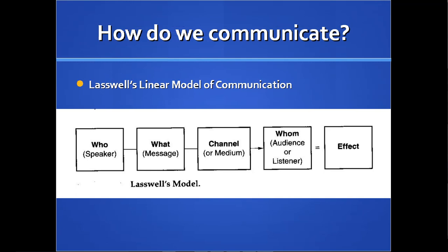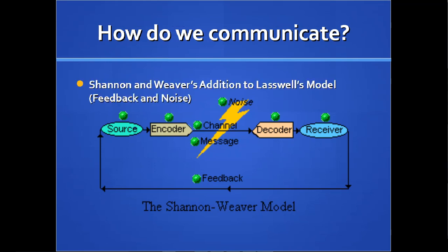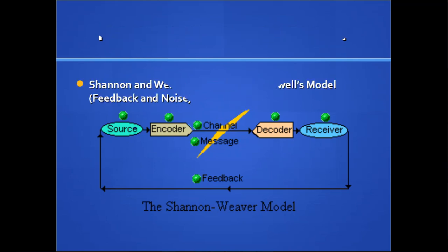Laswell had a good start, but we have to move forward and look at Shannon and Weaver's model. Shannon and Weaver were able to add a couple of other things, like noise — the idea that you can have interference in communication. They also came up with the idea of feedback, so it's not just one-way communication. The receiver can send information back to the source.